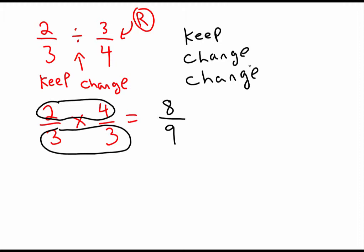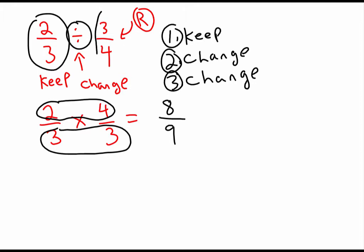Because what essentially we're doing is step one, we've got to keep the first fraction. We keep this one the same. The second step, you have to change this symbol into times. And the third step is you have to change the second fraction into its reciprocal. So keep change, change. Remember that. Let's do some more.